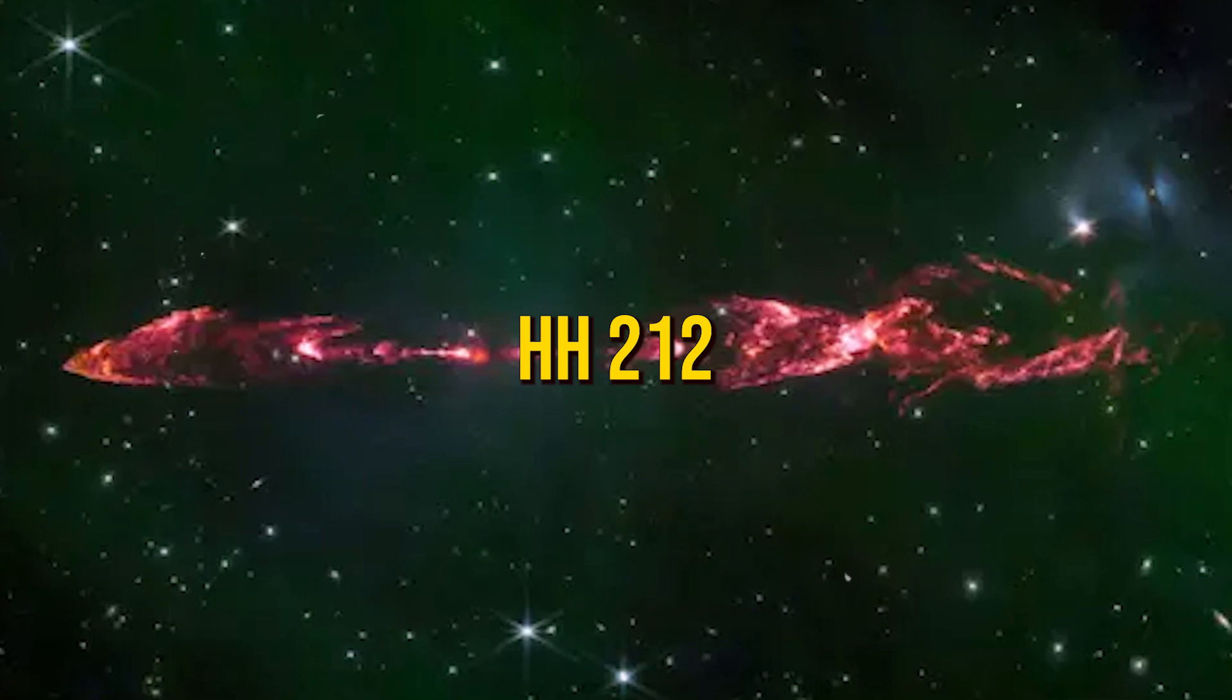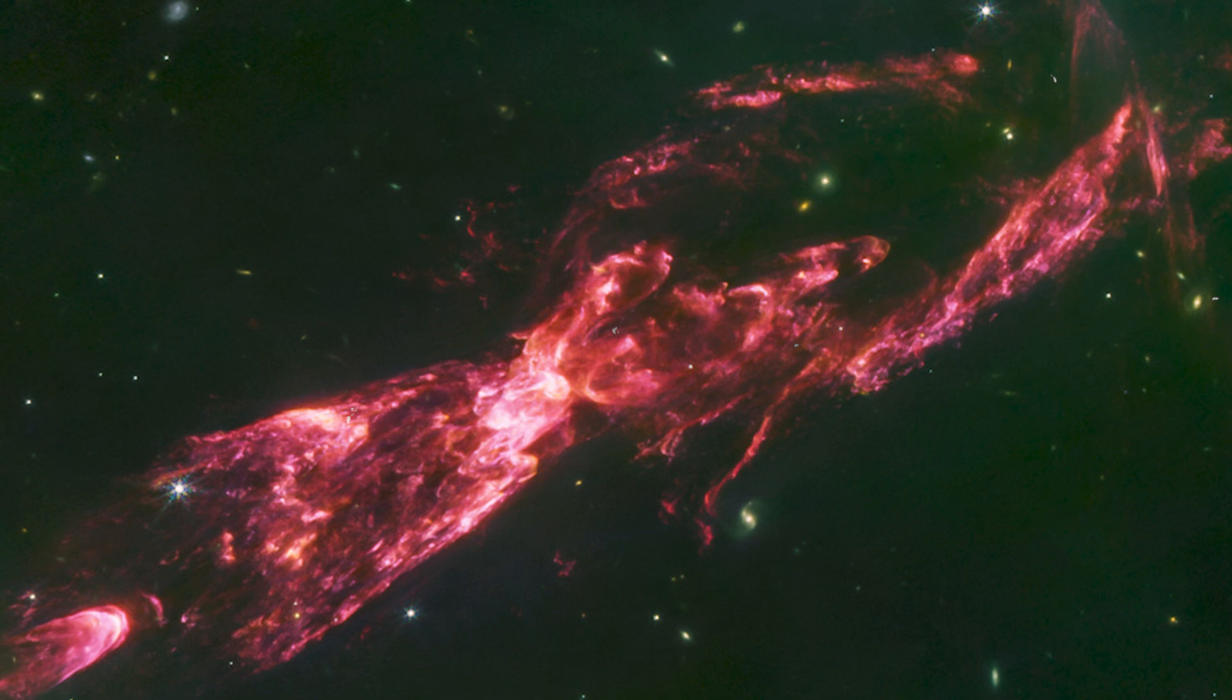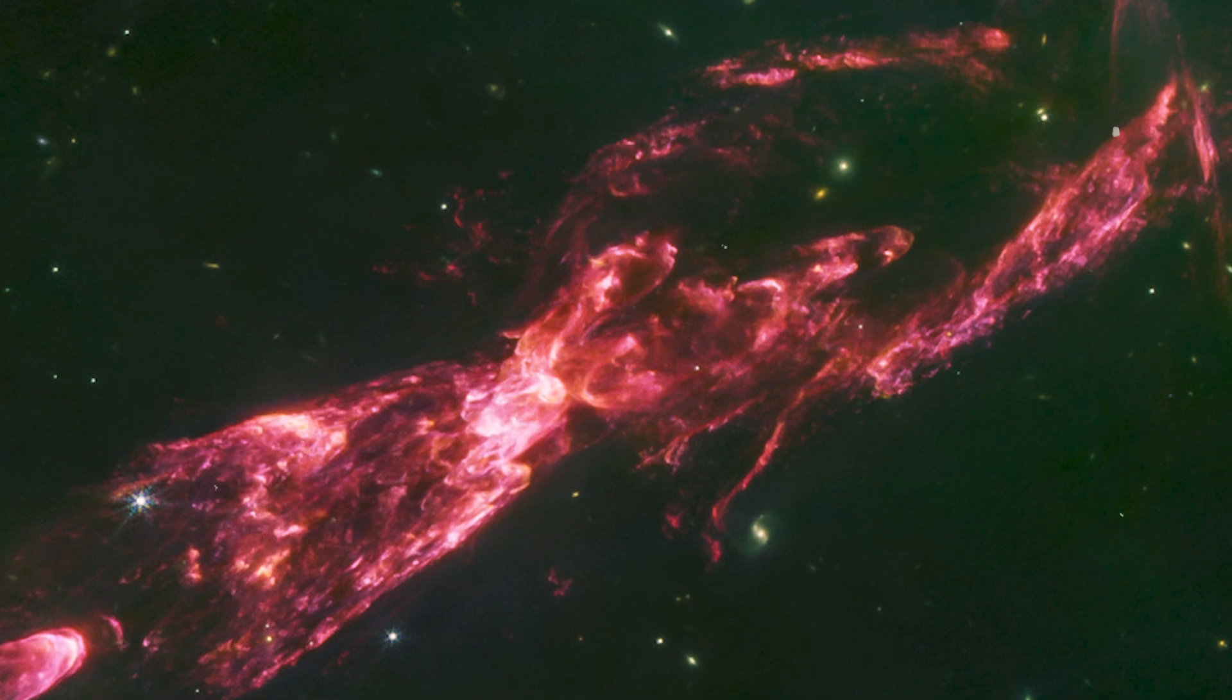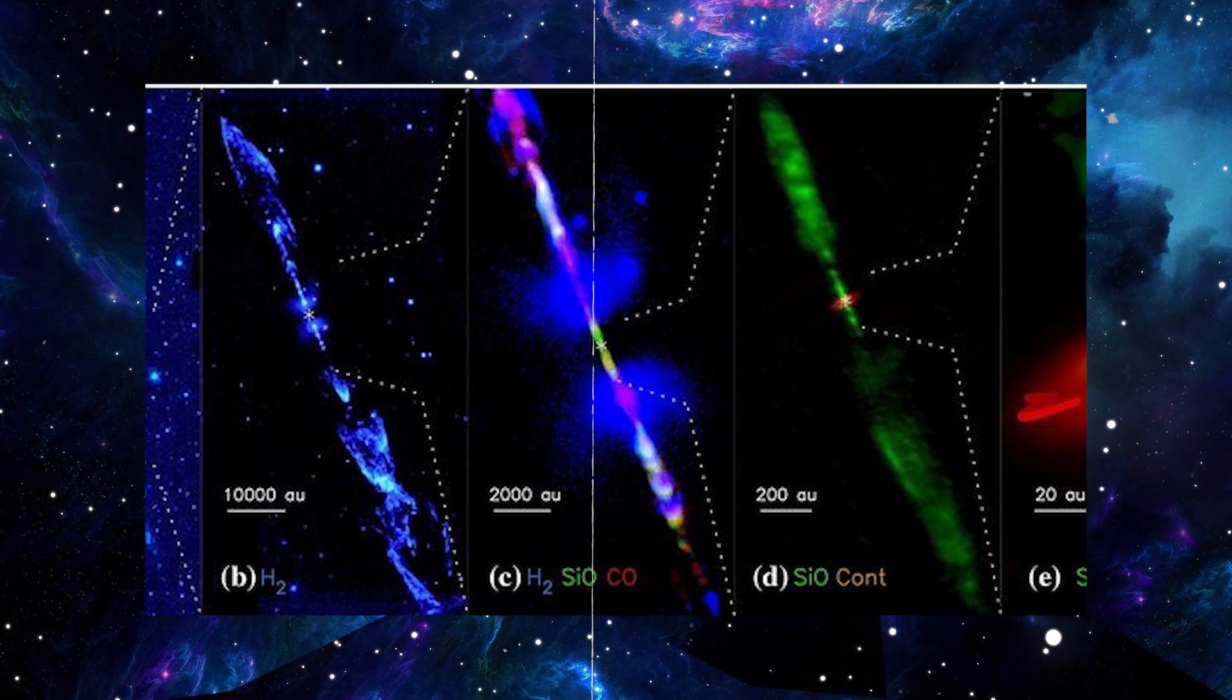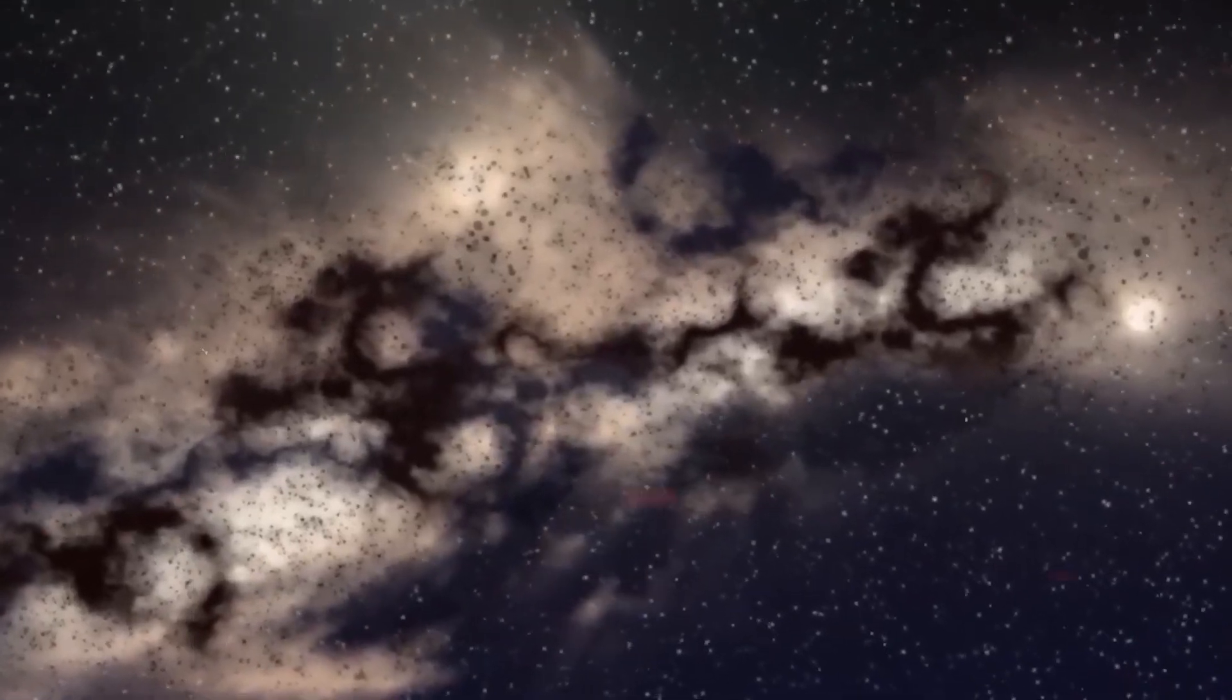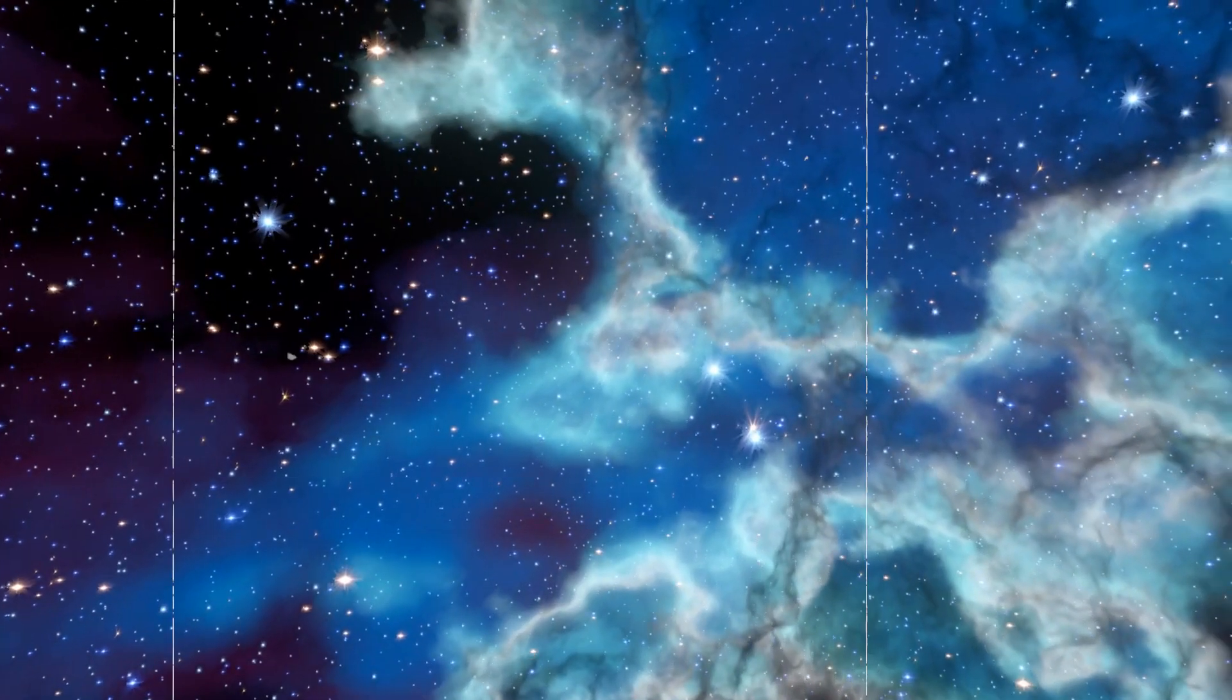Enter HH-212, nestled in the Orion constellation, a young star just 50,000 years old. Webb's image unveils vibrant pink-red jets shooting out in opposite directions, offering a glimpse into the hidden drama within a swirling disk of gas and dust. But why can't we see the star itself, and what cosmic mechanisms are behind these dazzling jets?